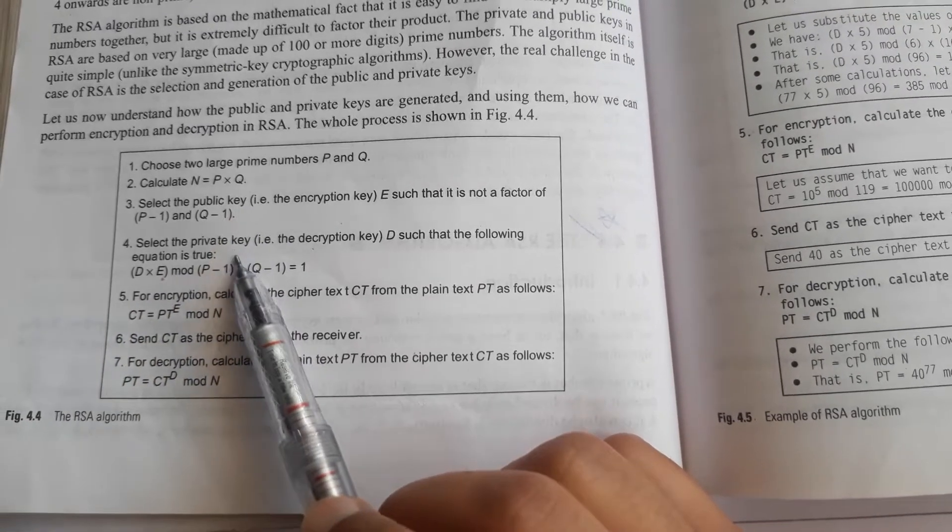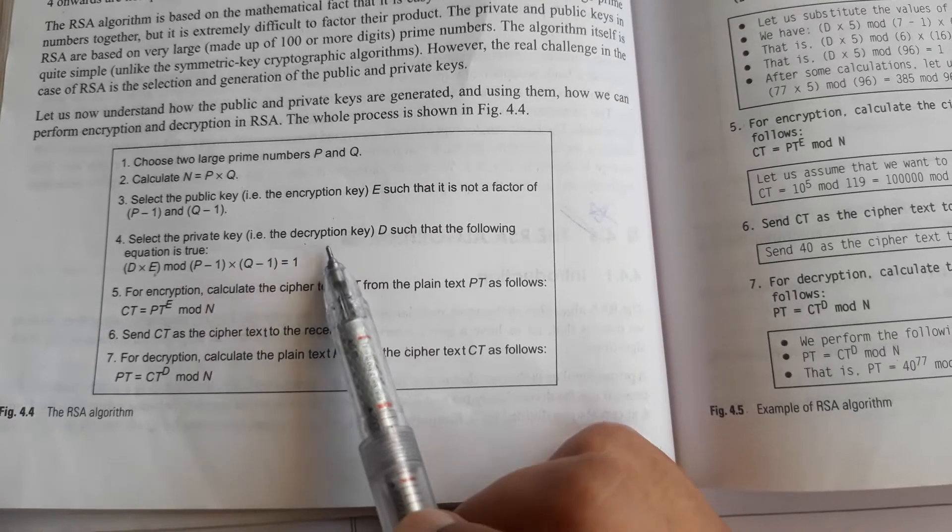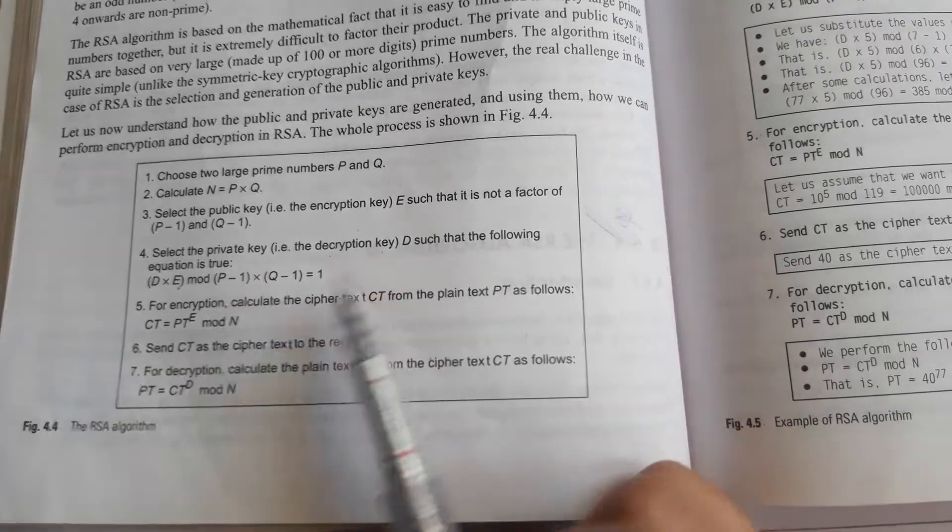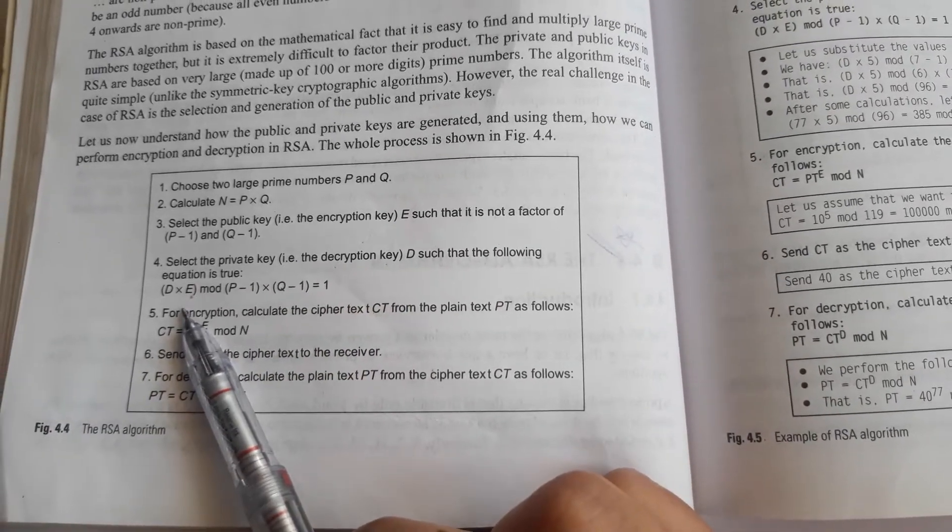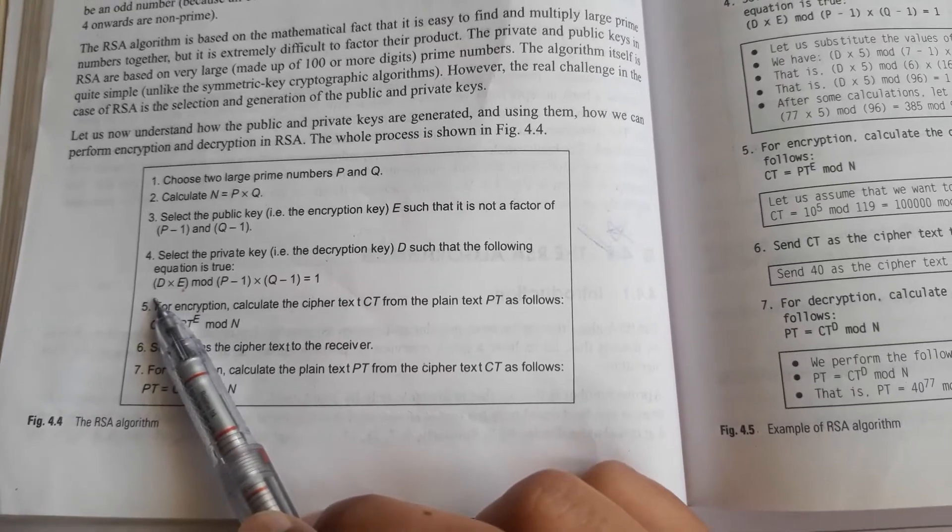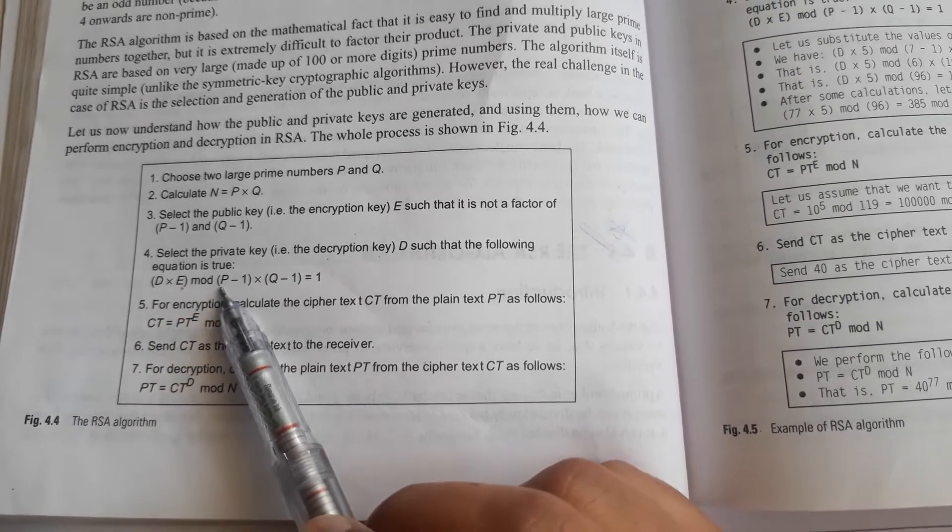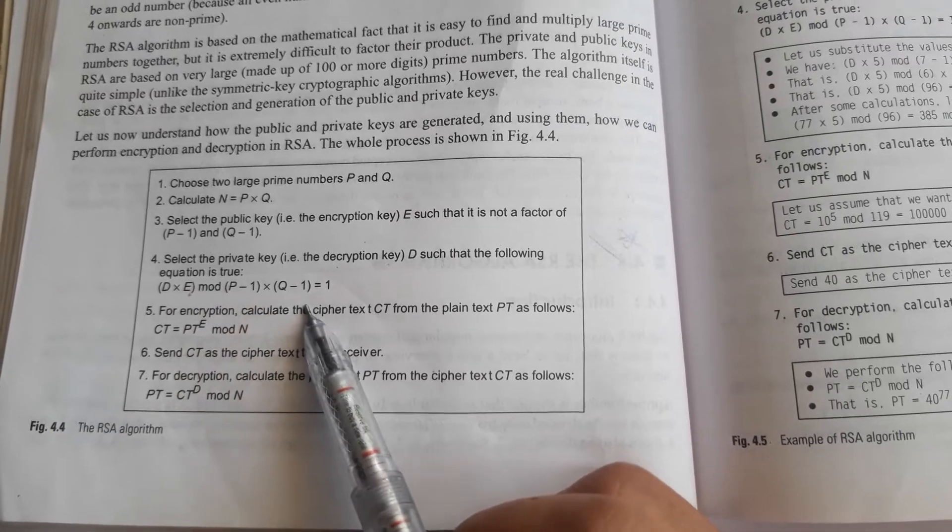we have to select the private key. So private key or the decryption key that is D such that the following equation: D × E mod (p-1)(q-1) = 1, where D is decryption key and E is encryption key.